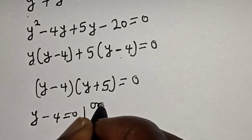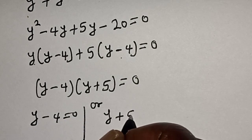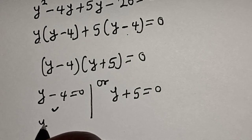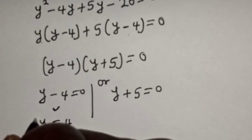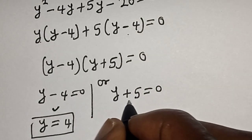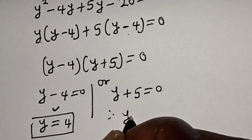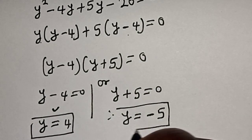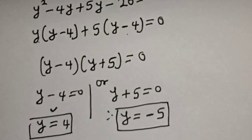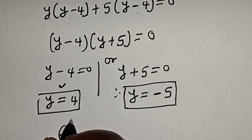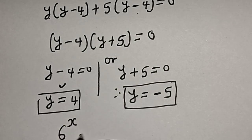Since (y minus 4) is common, we have (y minus 4) multiplied by (y plus 5) is equal to 0. There are two cases: y minus 4 equals 0, giving y equals 4, or y plus 5 equals 0, giving y equals negative 5.